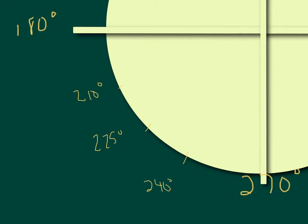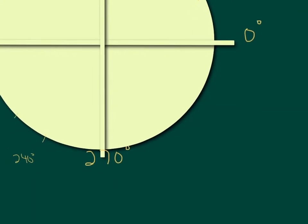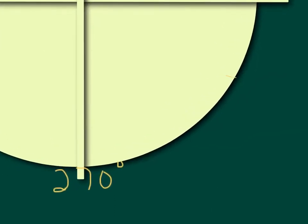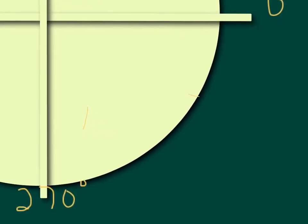Notice I'm always going 30 degrees more than and less than 180. Let's jump into quadrant four. What is 30 degrees less than 360? I'm comparing this to the x-axis right up here. This is zero degrees, but once around is also 360. So what's 30 degrees less than that? Well, 30 degrees less than 360 would be 330 degrees. 45 degrees less than 360 is going to be 315 degrees. And 60 degrees less than 360 is going to be 300 degrees.